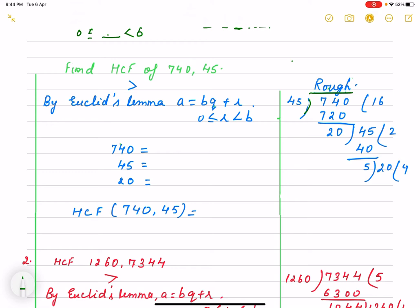If two numbers are there, suppose here 740 and 45 is there. Bigger one, that is the larger number becomes the dividend. And smaller one is the divisor. We divide it like 45, 16, 720. Then we subtract 20 is there, 0, 0, 4, minus 2, 2.